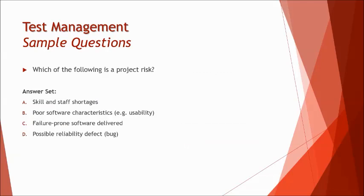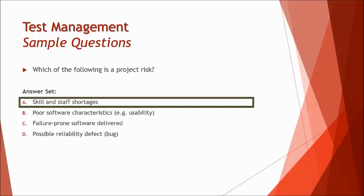The next question asks which of the following is a project risk. Option A — skill and staff shortage — is a project constraint, so it is the right answer. Options B, C and D — poor software characteristics, failure prone software delivery, and possible reliability defects — are all product risks. So the right answer is A, and the other three are your product risks.